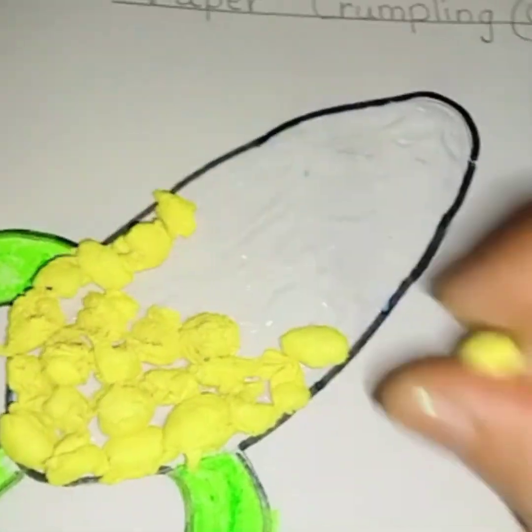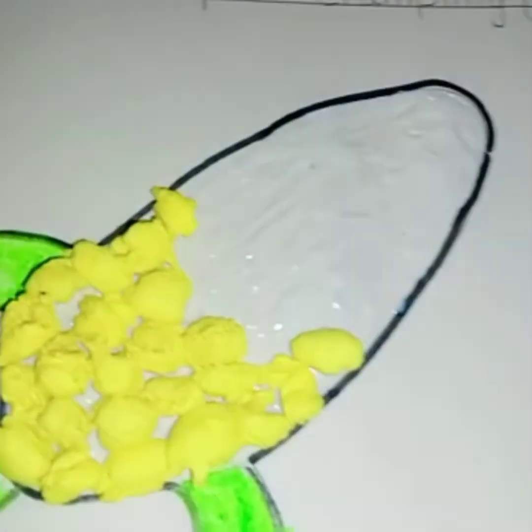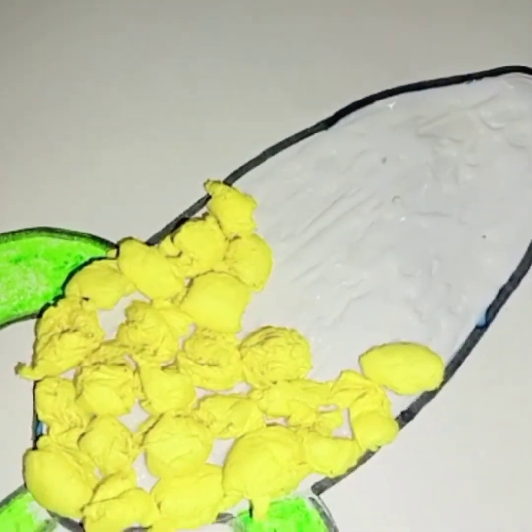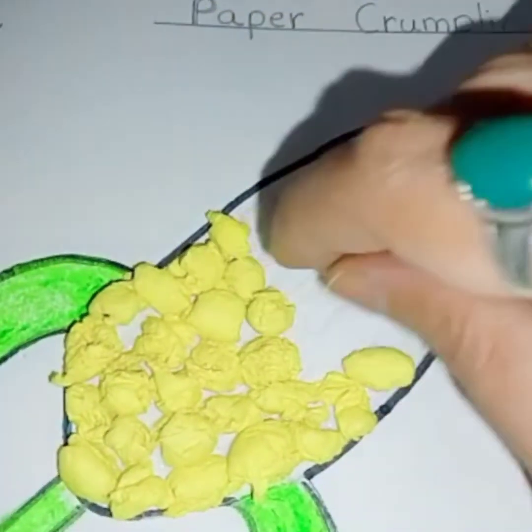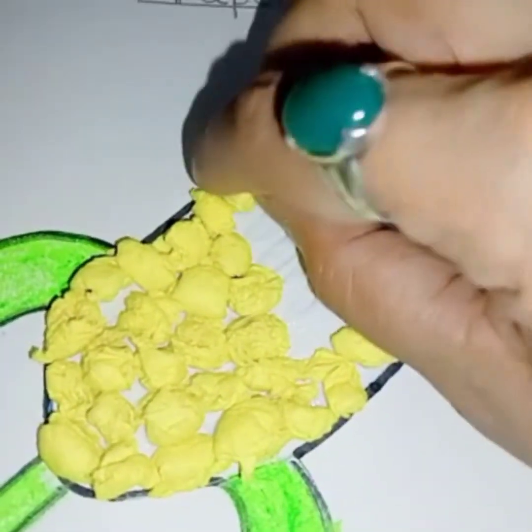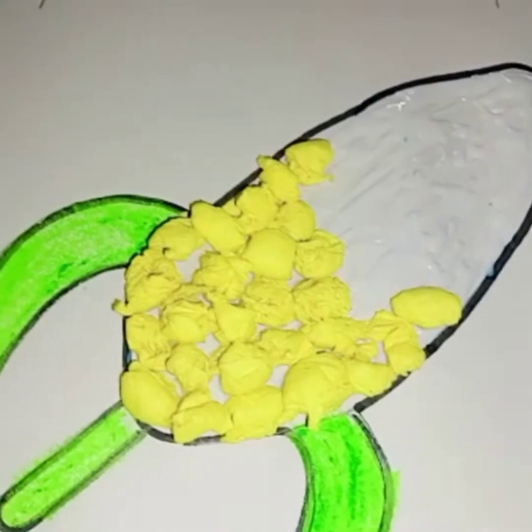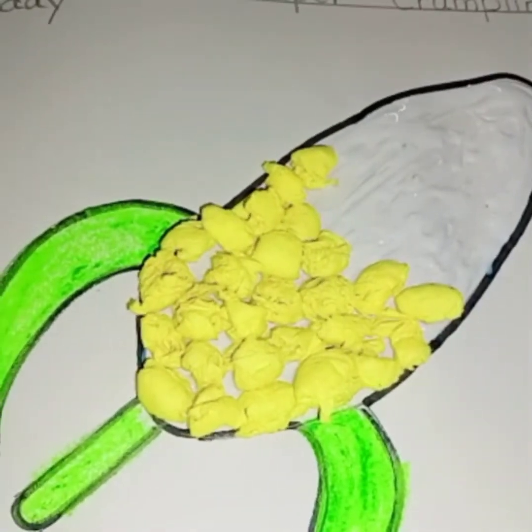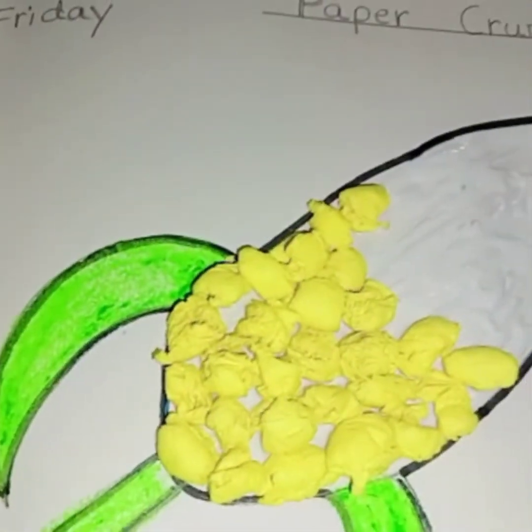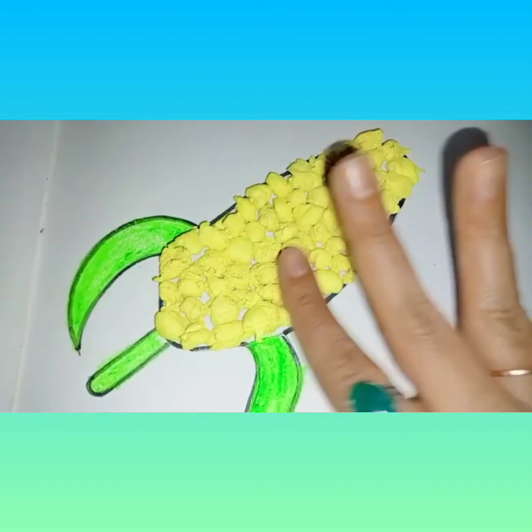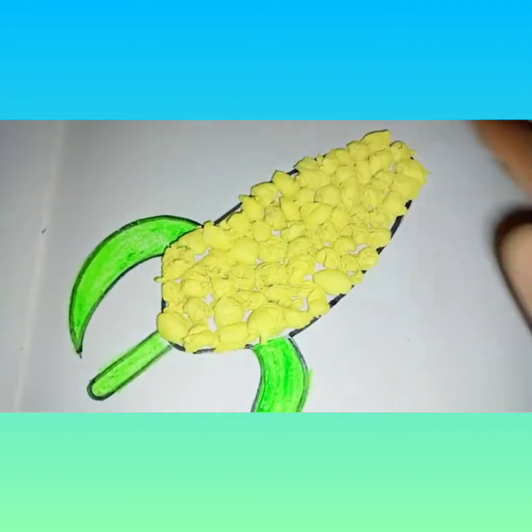And remember children, when you are pasting the crumples, paste them near by near. And remember when you put fevicol, you have to make all the crumples, these paper crumples are ready. Otherwise if you apply fevicol first and then make the paper crumples it will take time and the fevicol will dry up. Right? So before applying the fevicol you can make the paper crumples. Try to make it yourself. See children, isn't it looking beautiful? So like this you have to complete it and you have to place the paper crumples nicely and fill up this area.